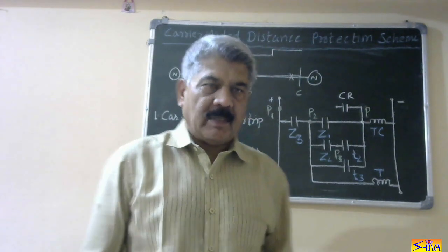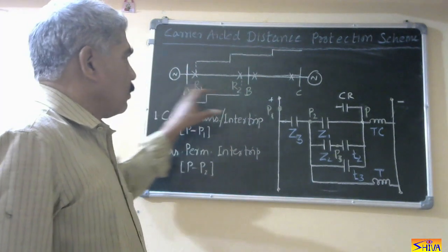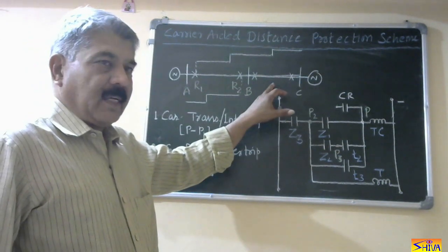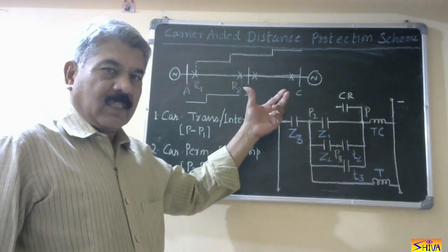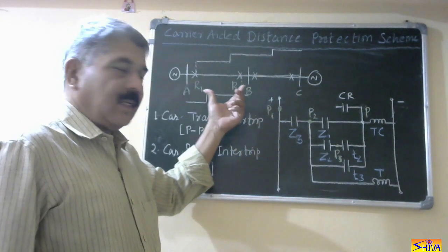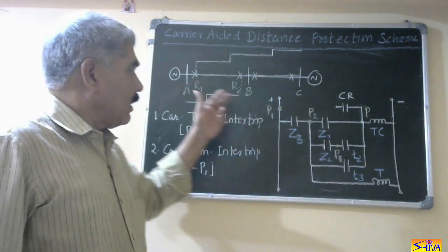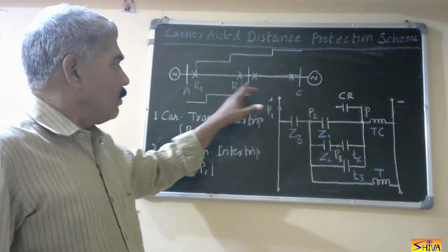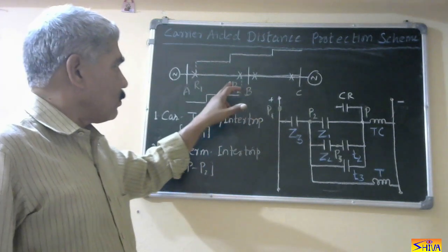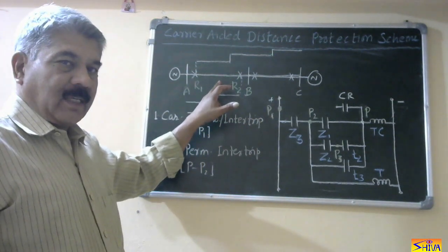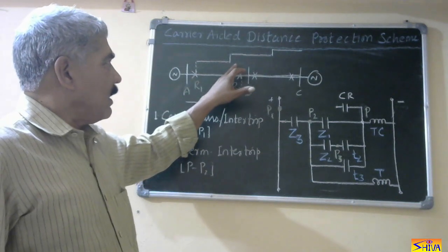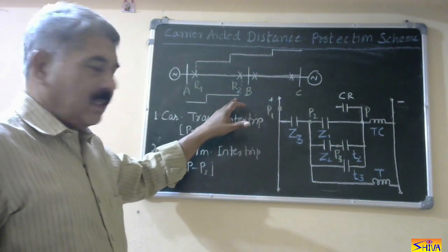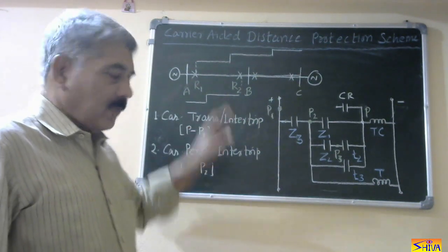Let us recall the principle. This is the simple system: two radial feeders with sources at both ends. As sources are at both ends, we require a relay at both ends of the line. We are providing three-step settings to the distance relays R1 and R2. For R1, it is 80% of the line in the first step, remaining 20% plus 30% of the next section in the second step, and so on. Similarly, we are providing settings to relay R2.